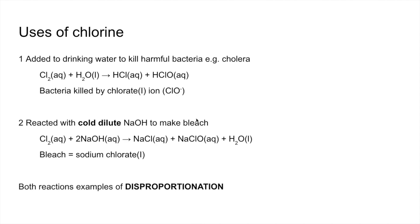Both reactions are examples of disproportionation reactions because chlorine is simultaneously oxidised and reduced. Using the first equation to illustrate: chlorine starts at zero in the element, goes to −1 in HCl (reduction), and goes to +1 in HClO (oxidation) — since oxygen is −2, hydrogen is +1, the chlorine must be +1 to keep the molecule overall neutral.